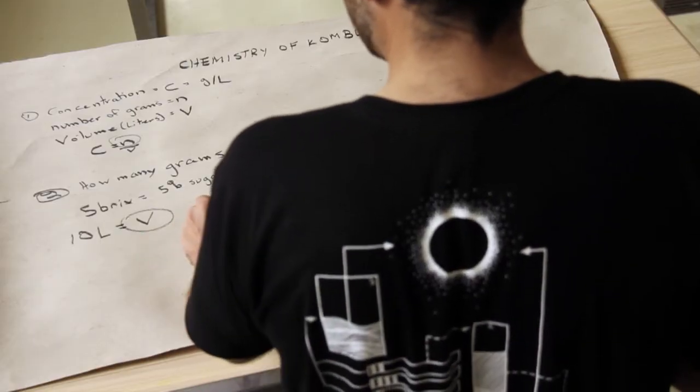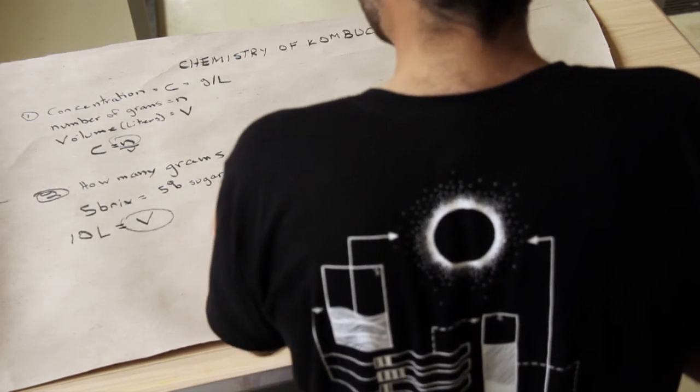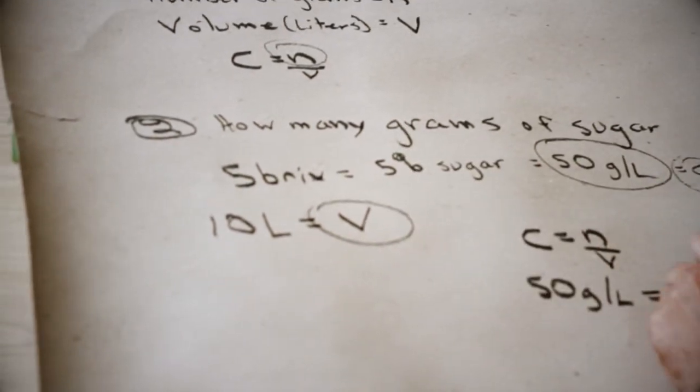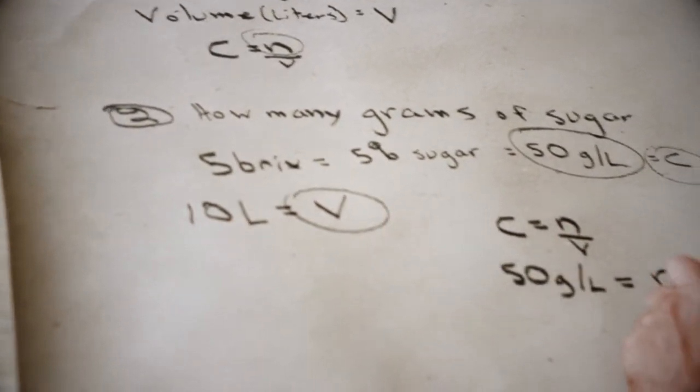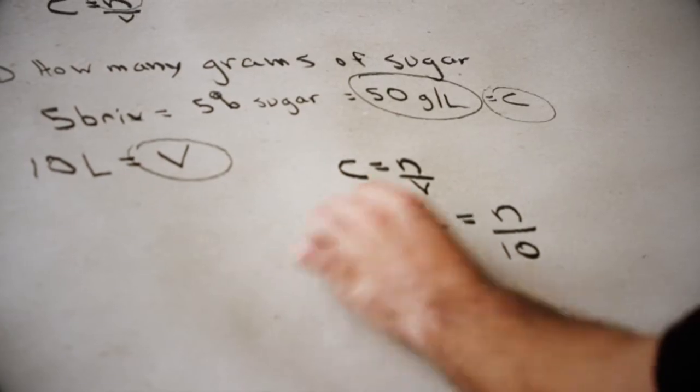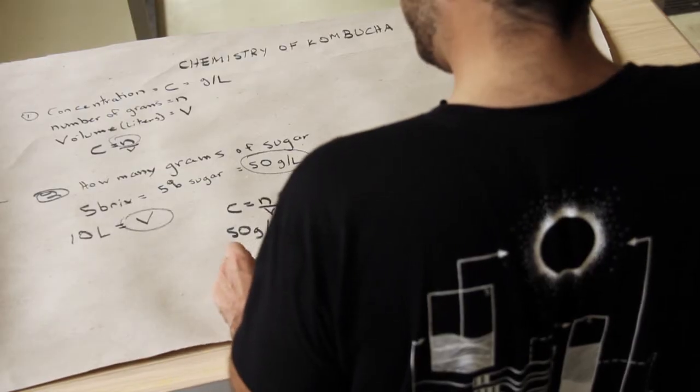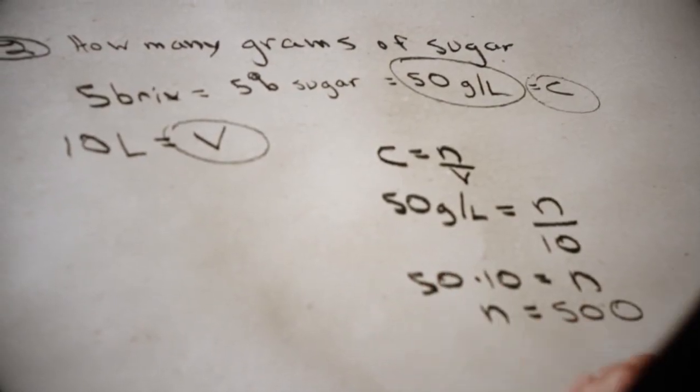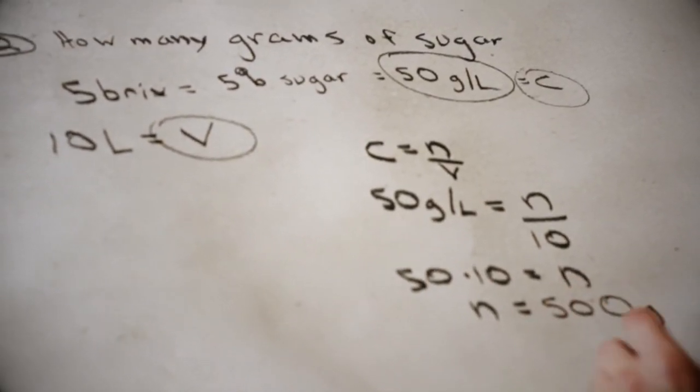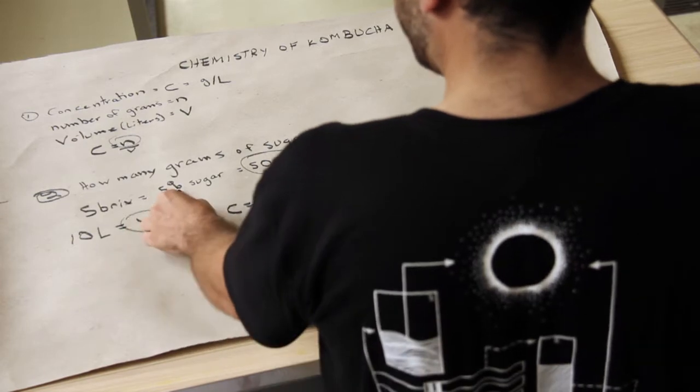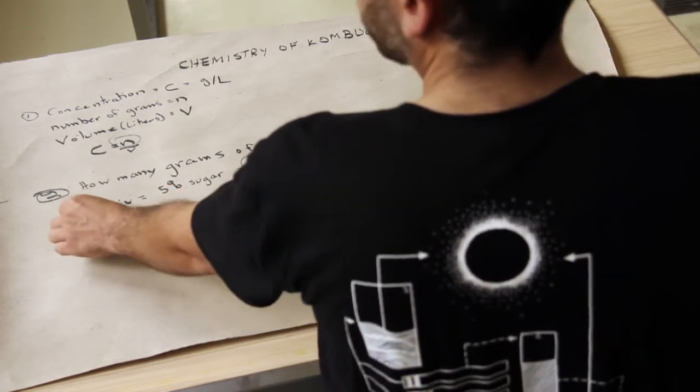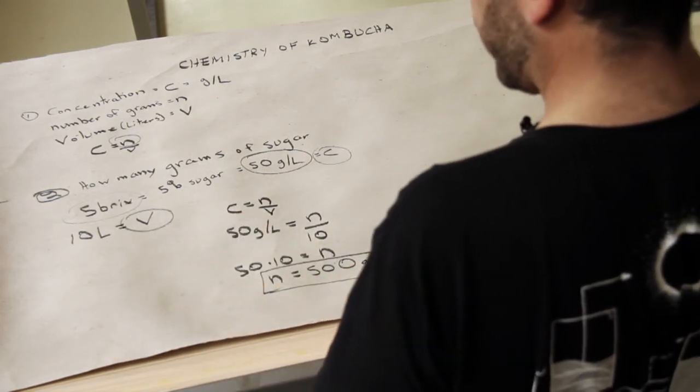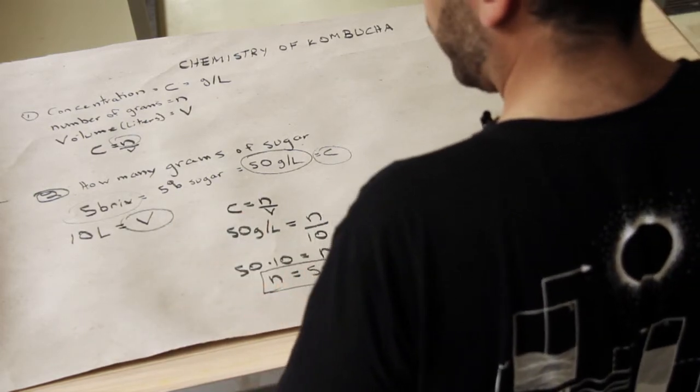Basically what I'll do is C equals N over V, and then I'll replace these. So C, 50 grams per liter, equals N, which is what we don't know, and V is 10, 10 liters. So if you want to solve this, we do 50 times 10 equals N. N equals 500 grams. So that means that if you have a solution that is 5% sugar or 5 bricks, which is what your instruments are going to tell you, you have 50 grams per liter, in which case you have 500 grams of sugar in your product.